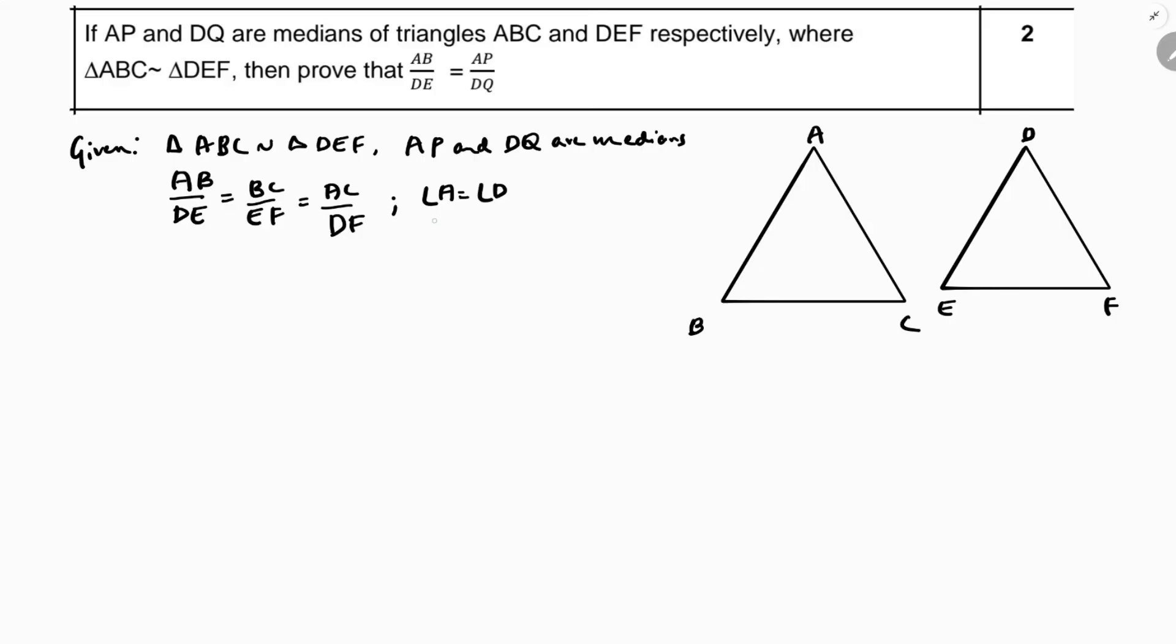Angle A equals angle D, angle B equals angle E, angle C equals angle F. This is all information we have because the triangles are similar.